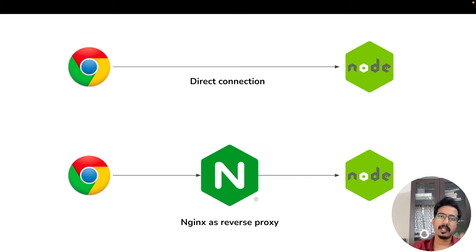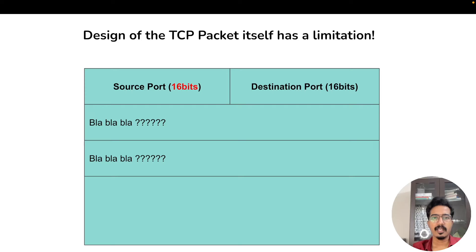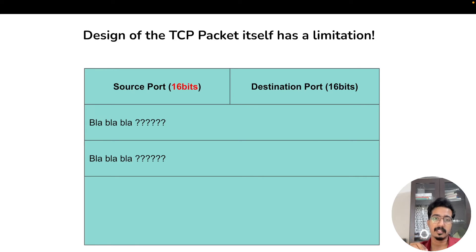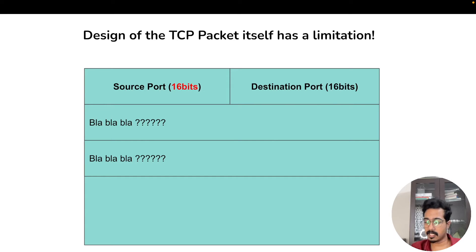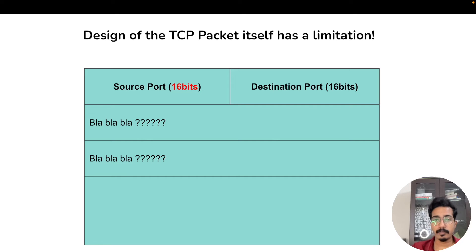There's another problem here. To understand it, we need to go back to TCP. Looking at a TCP packet layout, a unique TCP connection is identified by four fields: source IP address, source port, destination IP address, and destination port. When a browser wants to initiate an HTTP request to a server, the source IP and destination IP are fixed, and the destination port is fixed — nginx listens on port 80 or 443.